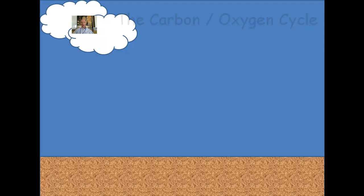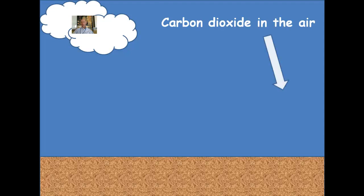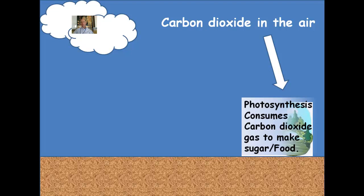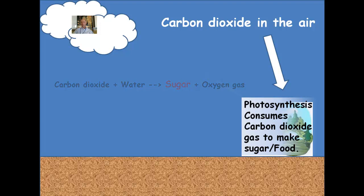We're going to start with carbon dioxide in the air. Your air is made up of less than 1% carbon dioxide. Carbon dioxide is not an organic compound, but it is taken up by plants and made into organic compounds through the process of photosynthesis. They incorporate carbon dioxide into sugars, or food, for the plant to use. A byproduct of that process of photosynthesis is oxygen. So 20% of the air that you breathe is oxygen gas, and we have plants to thank for that.